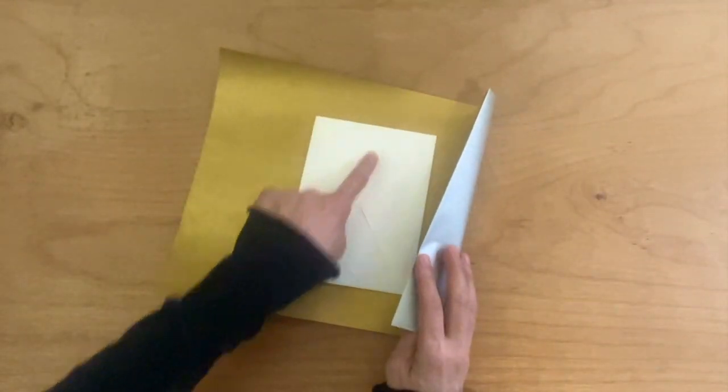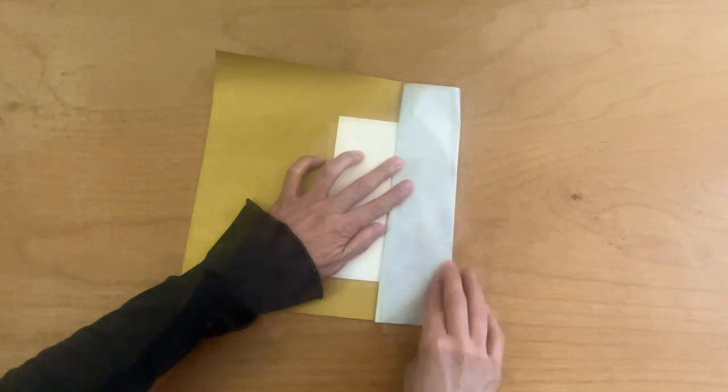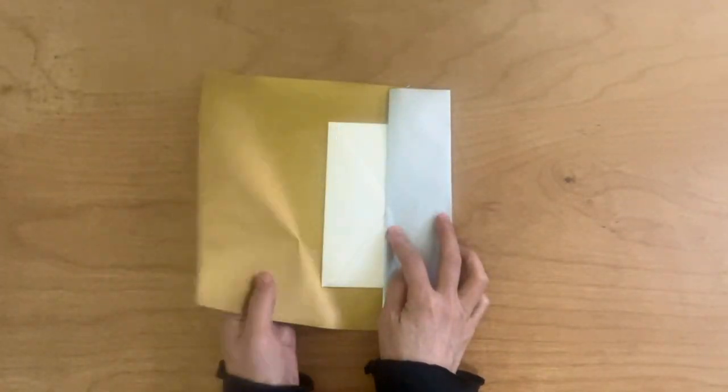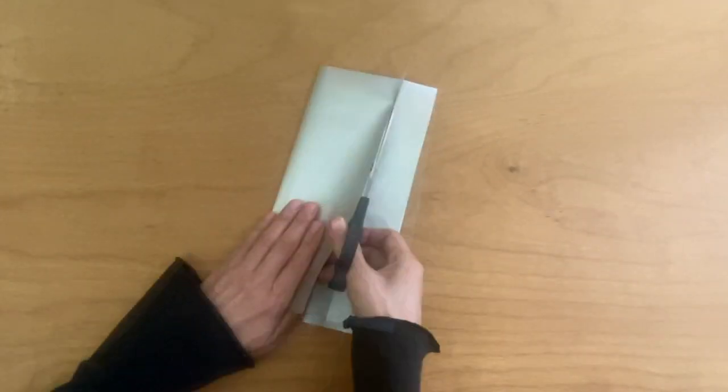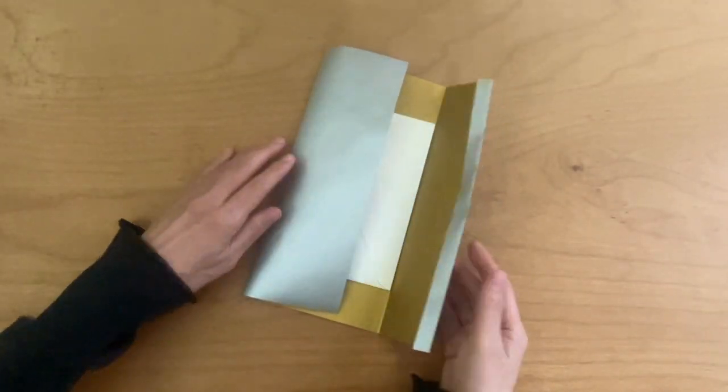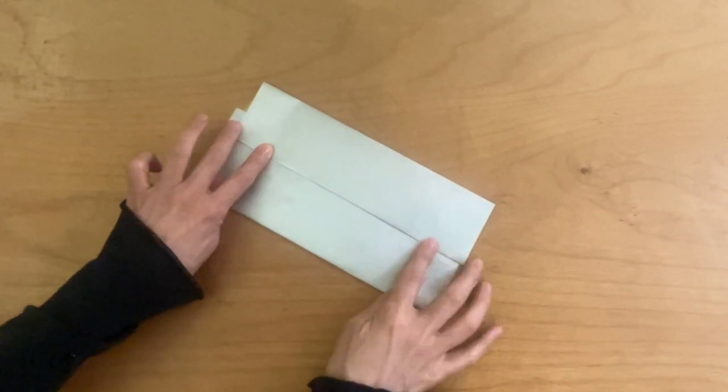Fold the right side of the paper to the center line of the back of the envelope. Fold the left side of the paper and cut off the excess. Close with double-sided tape. Adjust the color to be centered.